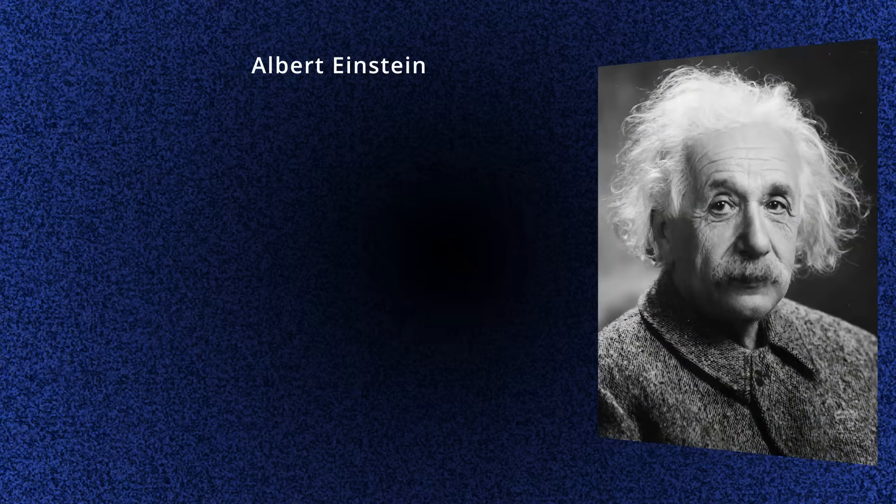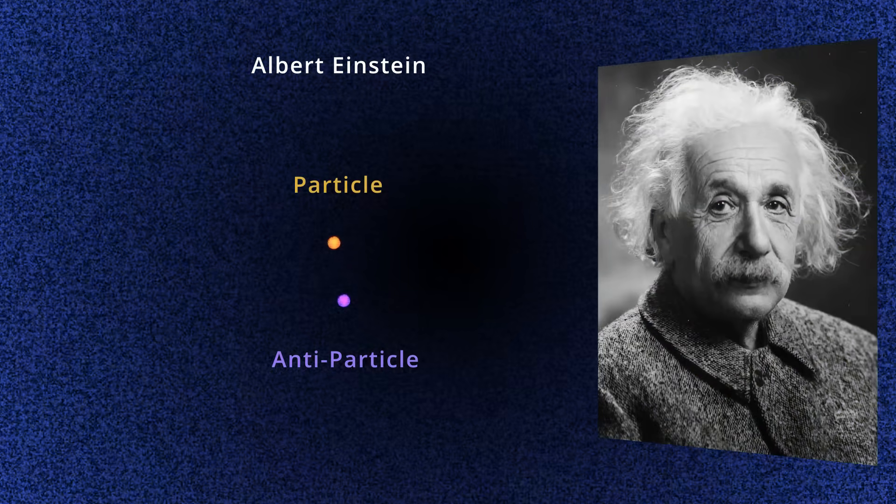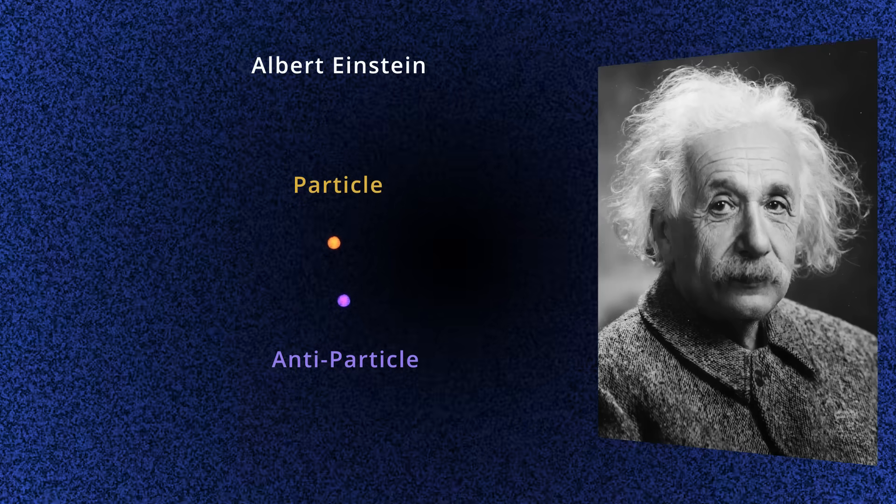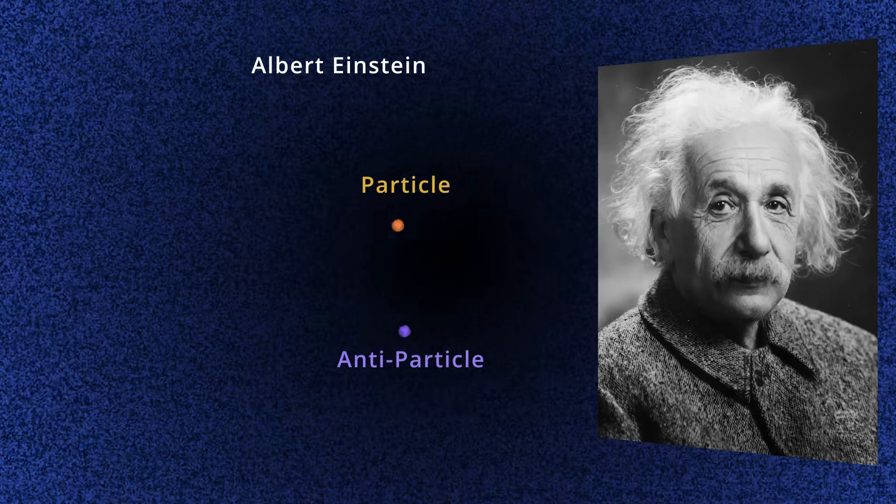Einstein pointed out that energy can convert to mass by simultaneously creating particles and antiparticles. Conversely, a particle can meet its own antiparticle, and they annihilate and convert to energy.